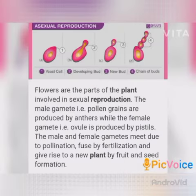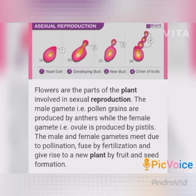Flowers are the part of the plant involved in sexual reproduction. The male gametes, pollen grains, are produced in the anthers, while the female gametes are produced in the pistil. The male gamete, through the process of pollination and fertilization, gives rise to a new plant by fruit and seed formation.